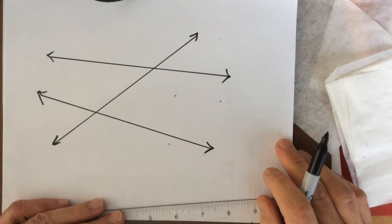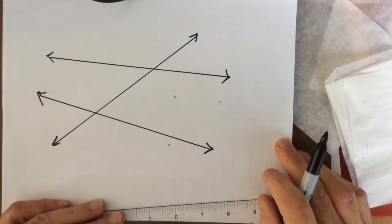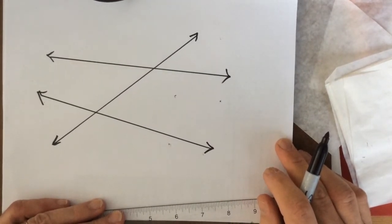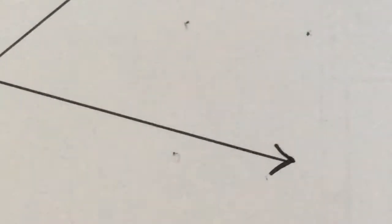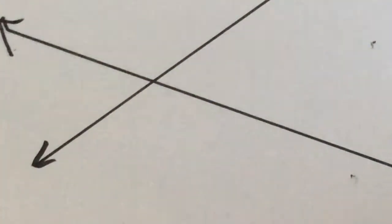A transversal. And what is a transversal? It's a line that cuts across two other lines. How many transversals do we have here? One. We have two intersections, right? Okay, so let's focus first on that intersection.